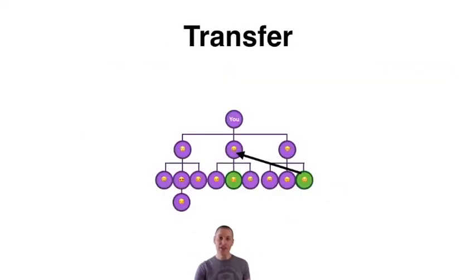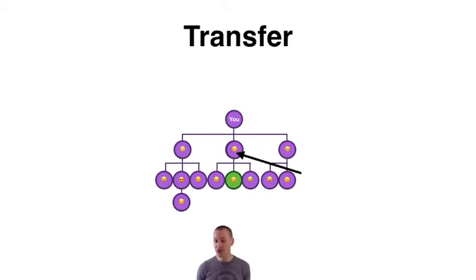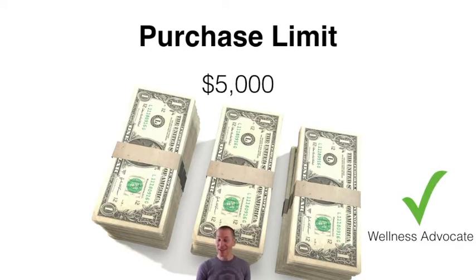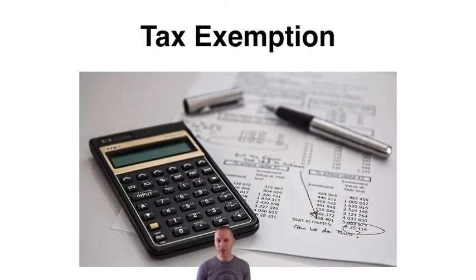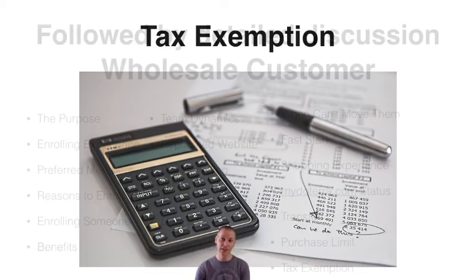When it comes to transfers, there is a possibility of transferring a wholesale customer into the place of a wellness advocate on your team. It has to be approved by the placements department, but that is a possibility. There is also a purchase limit for a wholesale customer — anybody spending over $5,000 US is considered to be running a business, and so to spend any more than that, they'll have to upgrade to a wellness advocate account, which shouldn't be a problem. There's also the ability to have a tax exemption status, the same as a wellness advocate.